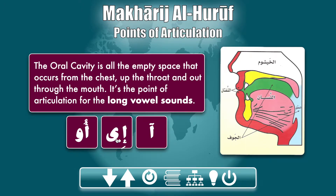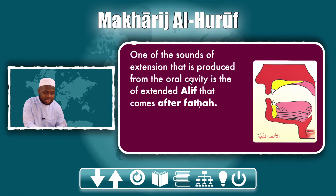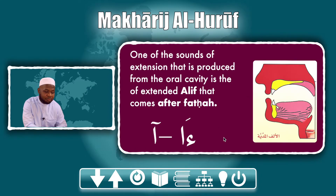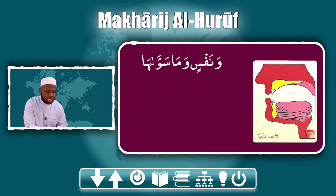The three sounds articulated from the oral cavity are: 'ah,' 'e,' and 'oo.' The sound 'ah' is basically the extended alif that comes after a fatha. Look at where the tongue is positioned when you say 'ah' — more or less flat. Most importantly, you need to open your mouth and make space inside.